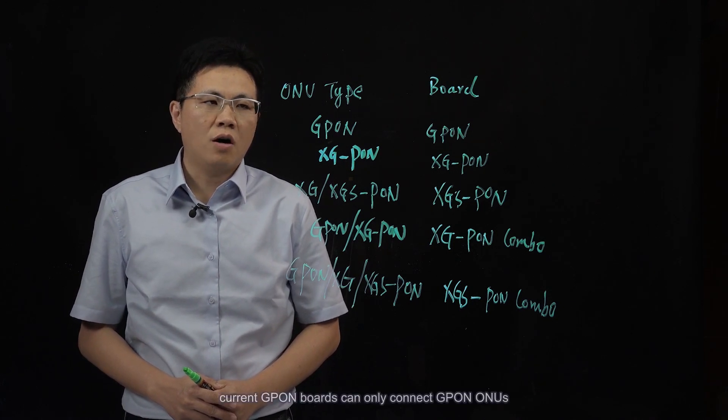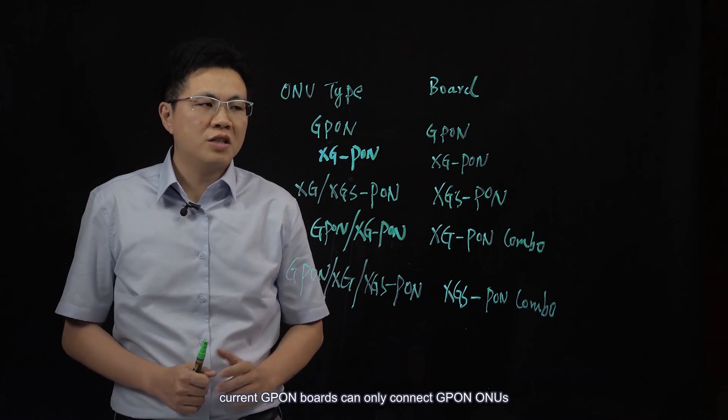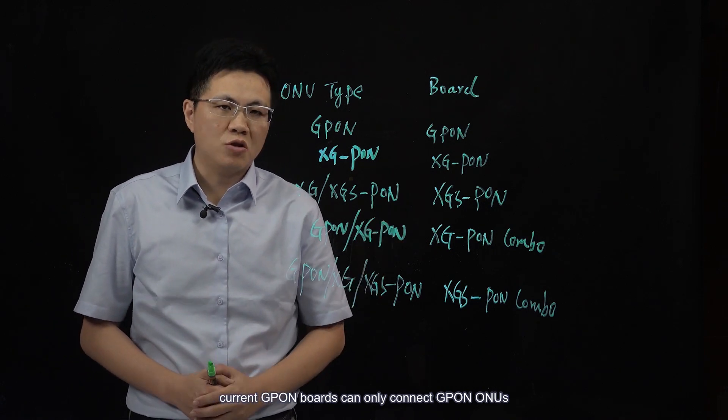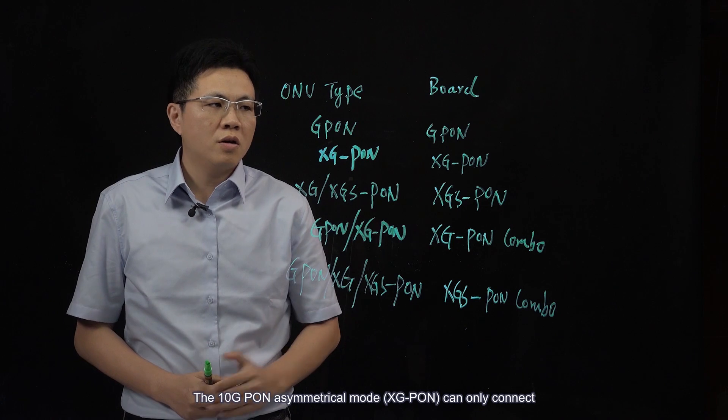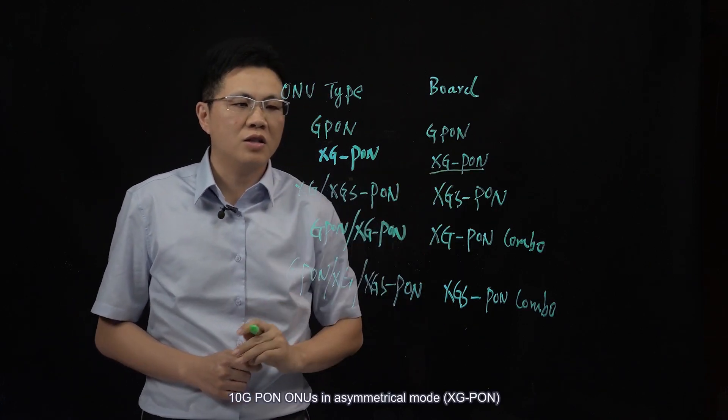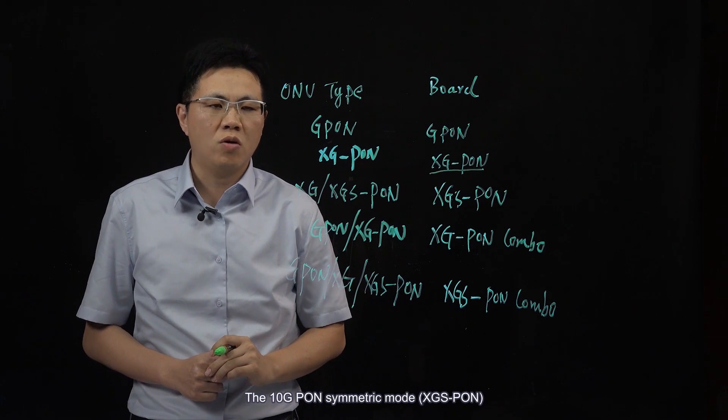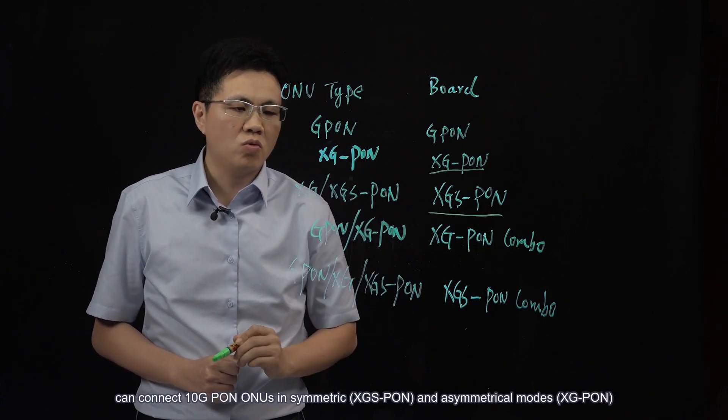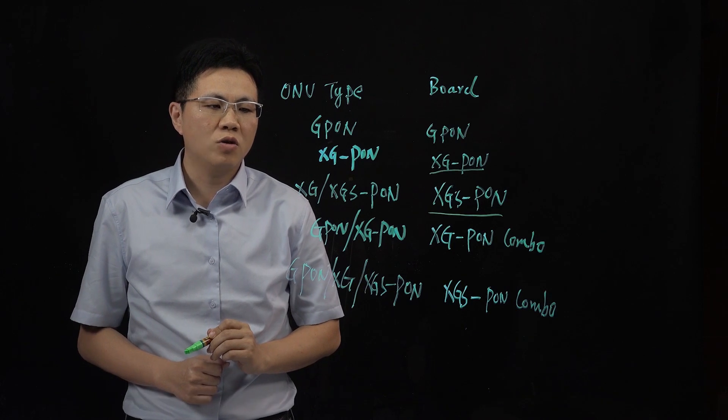As we know, current GPON boards can only connect GPON ONUs. The 10GPON Asymmetrical mode can only connect 10GPON ONUs in Asymmetrical mode. The 10GPON Symmetric mode can connect 10GPON ONUs in Symmetric and Asymmetrical modes.